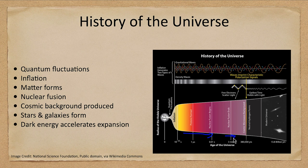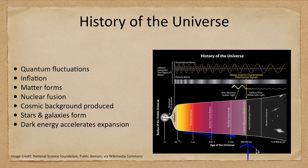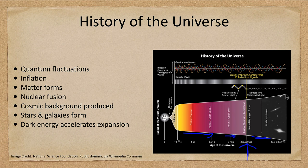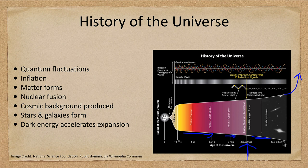The cosmic background radiation is produced and released at about 400,000 years. And then there's the dark ages where not much goes on. And then stars and galaxies begin to form. And then at the very end, dark energy accelerates this expansion. So what was a slower expansion is now going at a far more rapid rate.